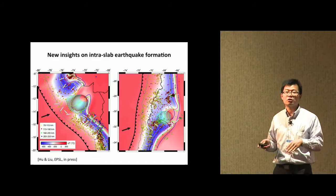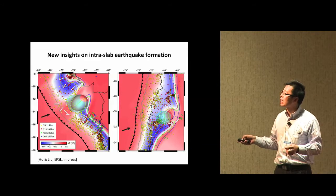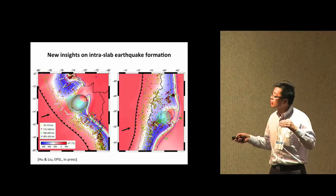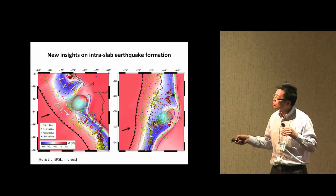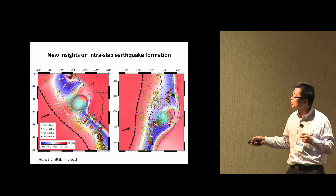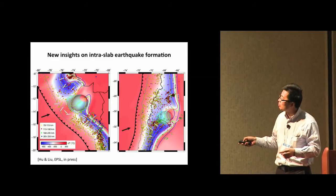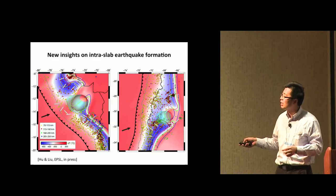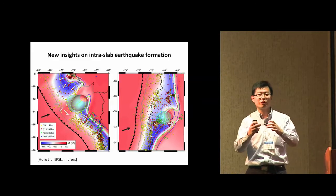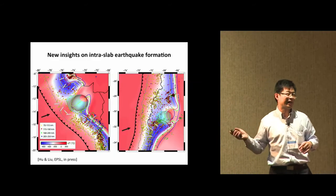Another important constraint is the dilatational stress axis inferred from focal mechanisms of earthquakes — essentially the stress state of the slab. Traditionally it is believed this stress state should always be perpendicular to the trench, but in the flat slab region the stresses go circular. Our model explains this naturally: wherever you form a gap or hole, it is the classic engineering problem of an expanding hole, where stress should be parallel to the rim of the hole.